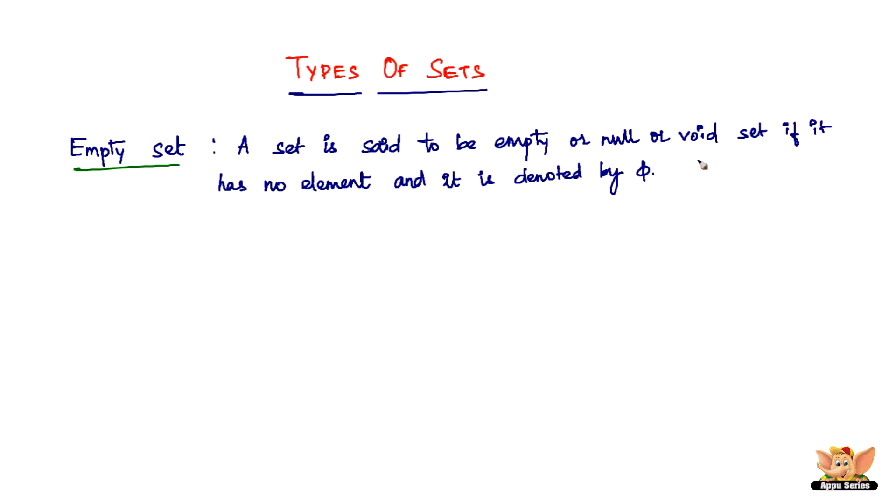An example for the empty set can be just two flower brackets with nothing in between. So this is called as an empty set.